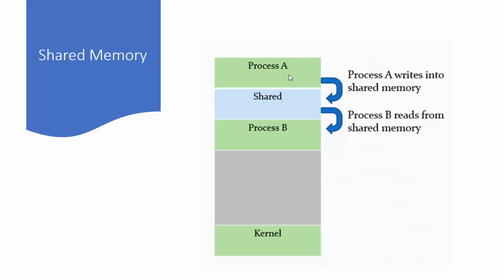You can see here in the diagram that there are two processes A and B, and a shared segment is created in between them. A is the sender process, so A will write the data into the shared segment, and the receiver, which is process B, will read the data from the shared segment. The shared segment is neither part of the address space of process A nor part of the address space of process B.